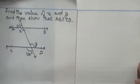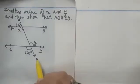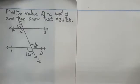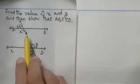Let us discuss this question. It says find the value of x and y. You are given a figure in which AB and CD are two lines and T is a transversal. We need to show that AB is parallel to CD.